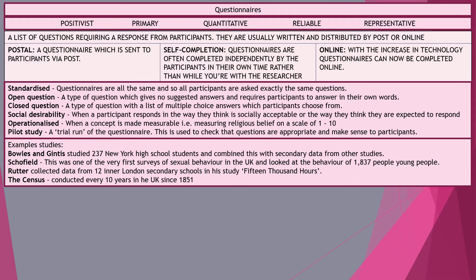Examples of questionnaires used in sociology include Bowles and Gintis, who studied 237 New York high schools using questionnaires as part of their Marxist study on the myth of meritocracy and the correspondence principle. Schofield conducted the first sexual behavior study in the UK in the late 1970s using a questionnaire, but because the researcher delivered the questions it became a structured interview, and people were less likely to give honest answers, with many giving socially desirable responses.